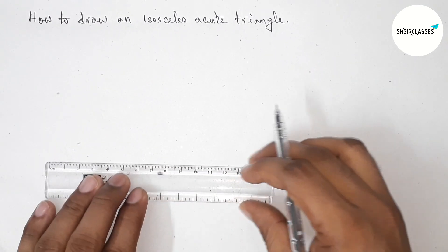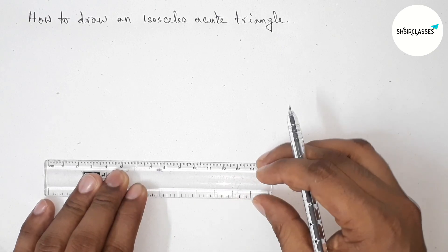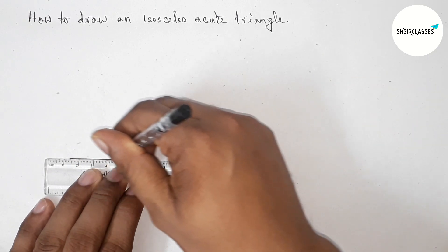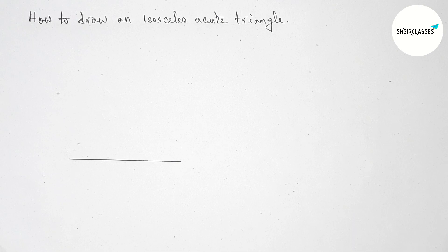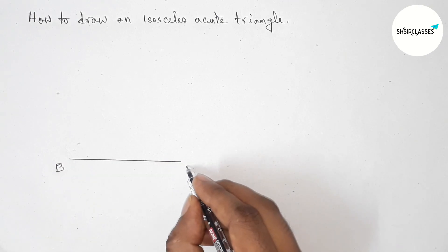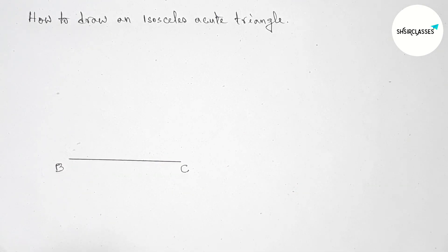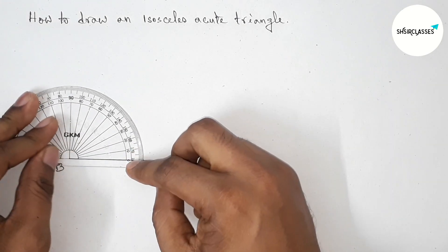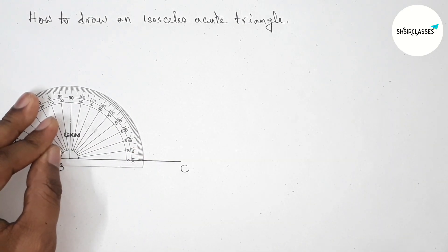First of all, let us draw here a line segment of any length and take point here B and here C. Next, draw an acute angle on the point B with the help of a protractor, and here keep